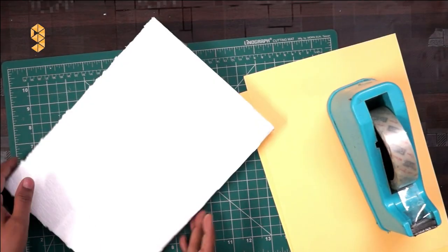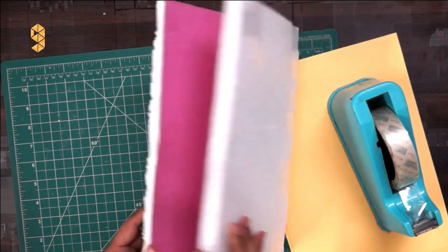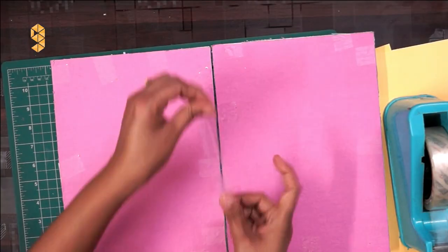Now take both sets and join them from the longer edge to make it look like a book. Now take any waste paper and finish all edges as we have done.